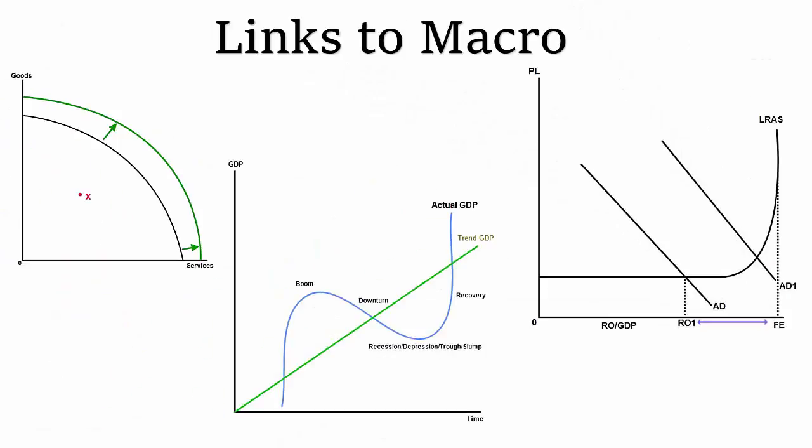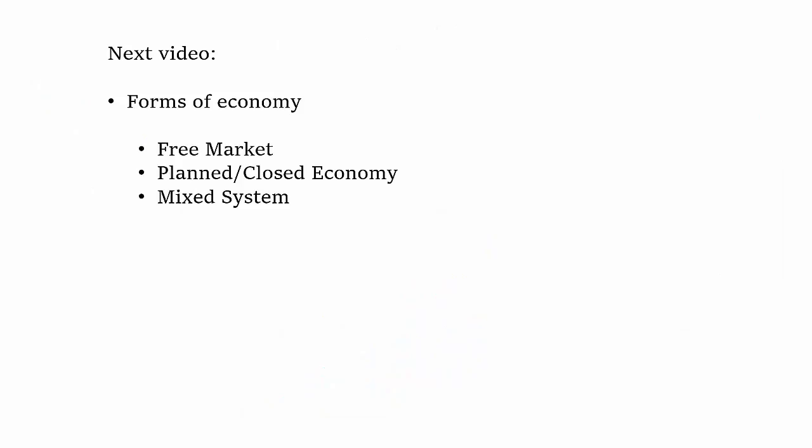So that's how it links to macroeconomics. And you'll be able to understand that a bit more once you've started doing macroeconomics in a bit more depth. And then you'll be able to link these all together in the exam, which will be very useful. So in the next video, we're going to look at different types of economy. So we're going to look at a free market, a planned economy and mixed economies. So if you want to go straight to that, please click on the link to the right now. If not, thank you very much for watching and please subscribe and like, and I'll see you in the next video.